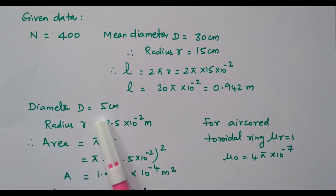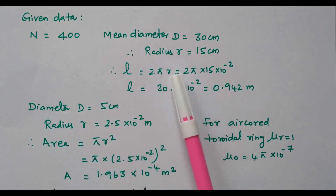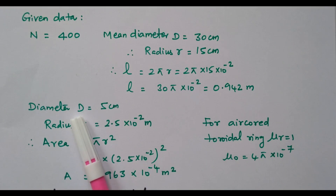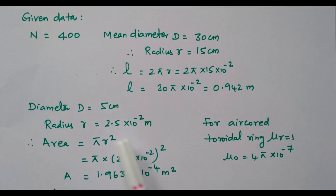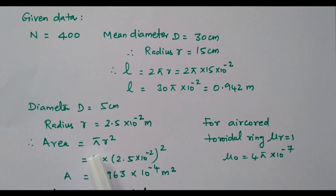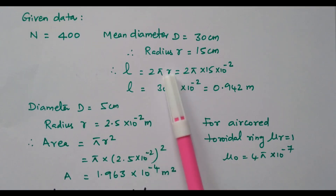The diameter of the cross-section is given as 5 centimetre — this is the diameter of the iron core. So the radius equals 5/2 = 2.5 centimetre = 2.5 × 10⁻² metre. From that we can calculate the area: π × r² = π × (2.5 × 10⁻²)² = 1.963 × 10⁻⁴ metre square. This is the area of the coil cross-section.